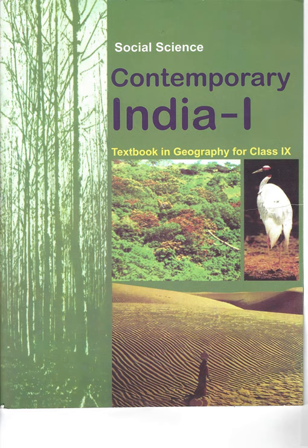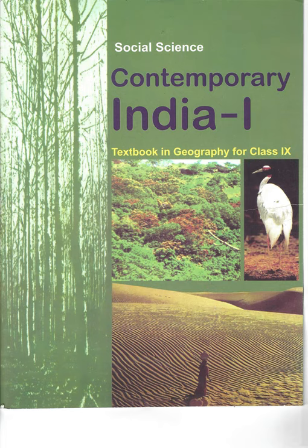The Brahmaputra marks the easternmost boundary of Himalaya beyond the Dihang Gorge. The Himalayas bend sharply to the south and spread over the eastern boundary of India. They are known as the Purvachal or the eastern hills and mountains. These hills running through the northeastern states are mostly composed of strong sandstones, which are sedimentary rocks, and run as parallel ranges and valleys. The Purvachal comprises the Patkai hills, Naga hills, Manipur hills and the Mizo hills.